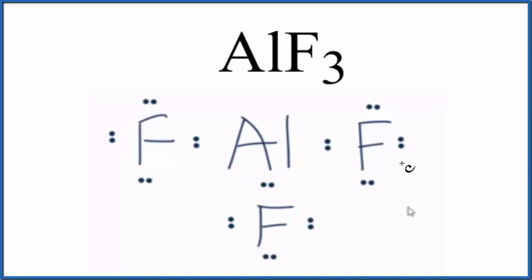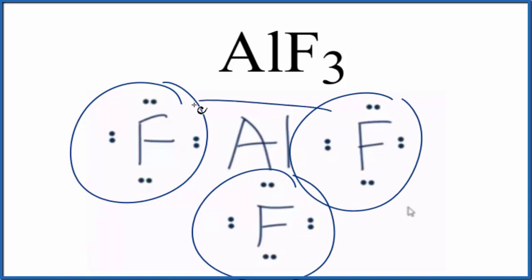First thing we need to do to find the molecular geometry for AlF3, we need the Lewis structure. So here's a Lewis structure for AlF3, and you'll note that all of the fluorine atoms, they have octets, but the central aluminum does not. That's okay. Aluminum is an exception. It doesn't have to have an octet.